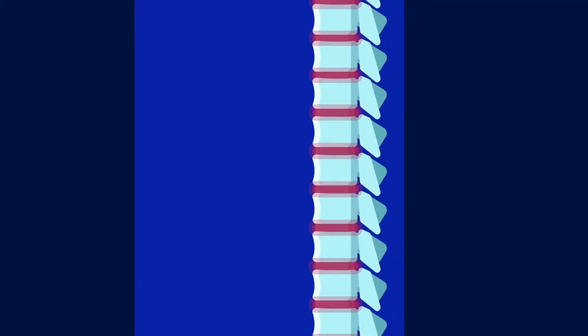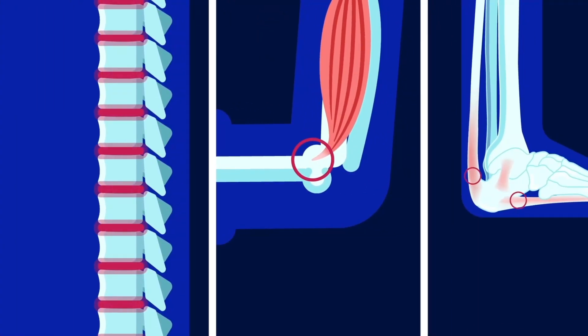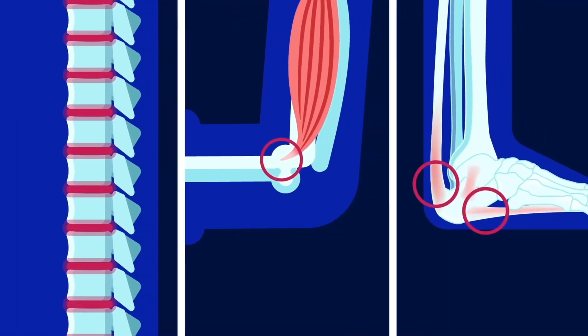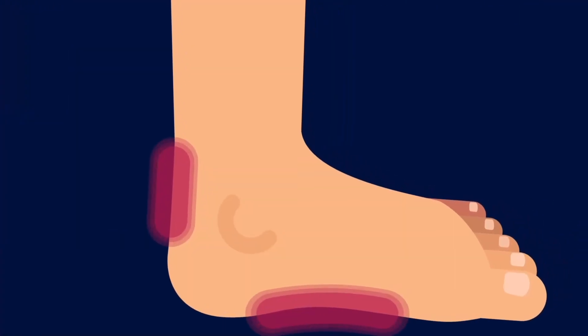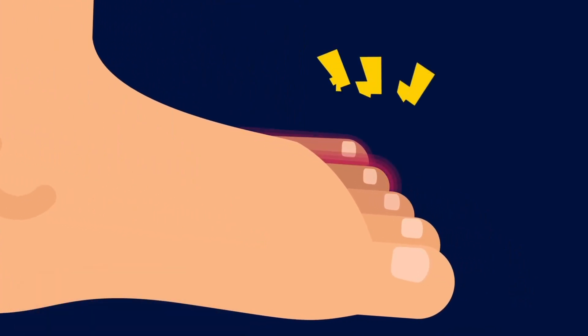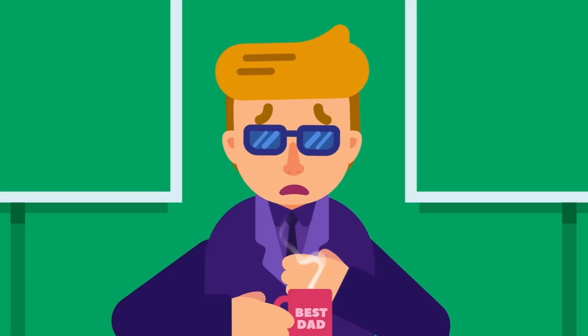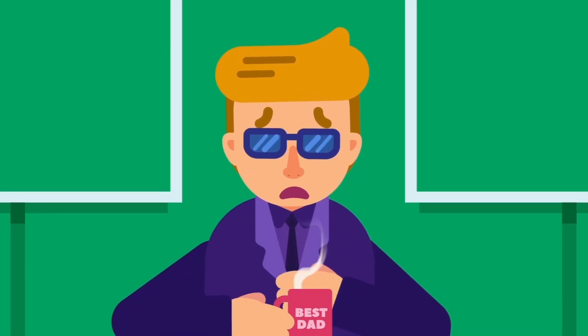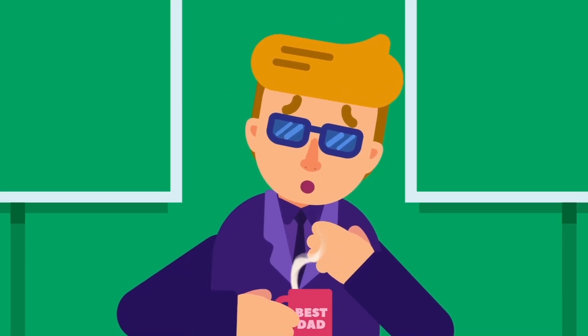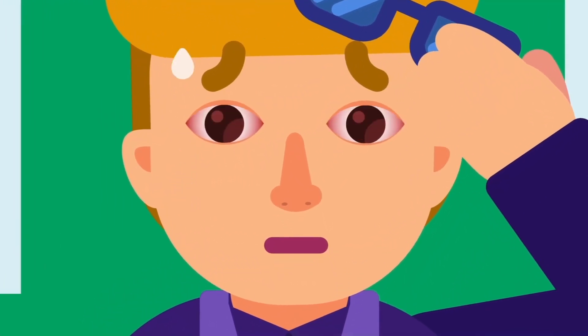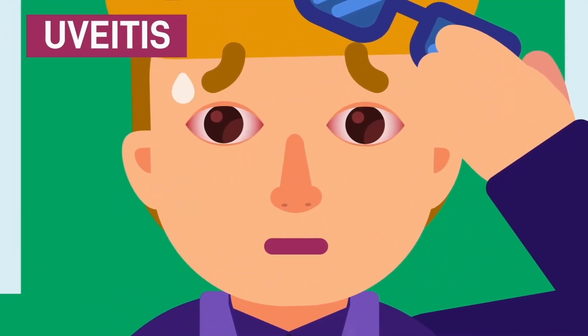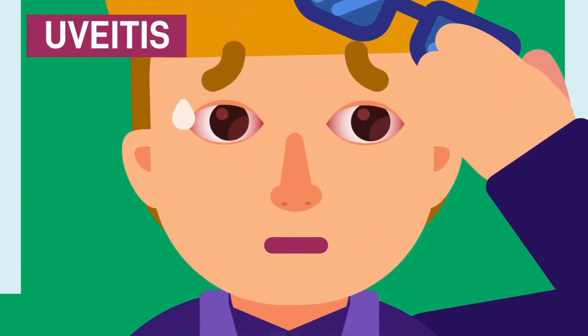Enthesitis, or inflammation that occurs at any point where tendons or ligaments attach to bone — for example, at the elbow and heel. Tenderness at the heel. Pain and swelling in a finger or toe, known as dactylitis. Chest pain. Tiredness or fatigue. Inflammation of the eye, such as uveitis or iritis.